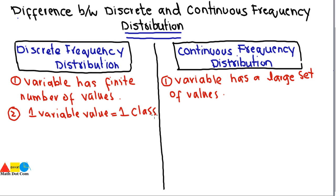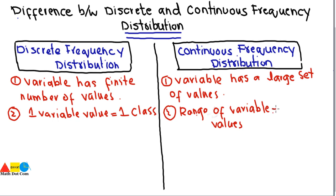The second difference is that one variable value is equal to one class in discrete frequency distribution. While in continuous frequency distribution, a range of variable values is equal to one group or interval, meaning one class contains multiple values.